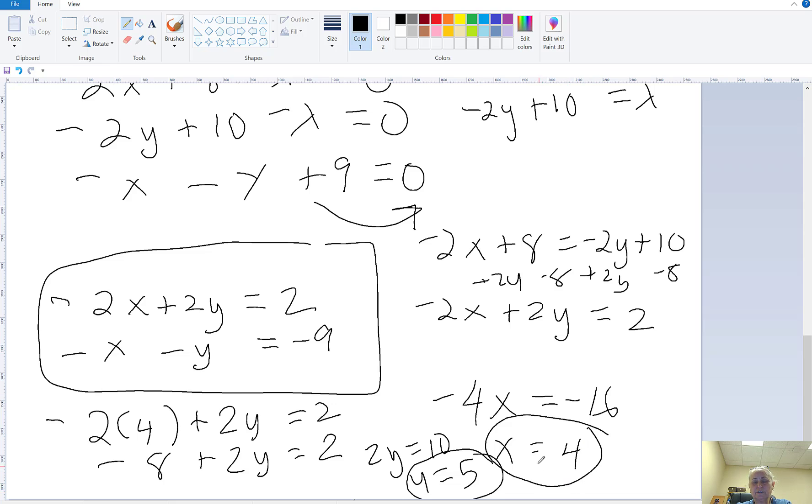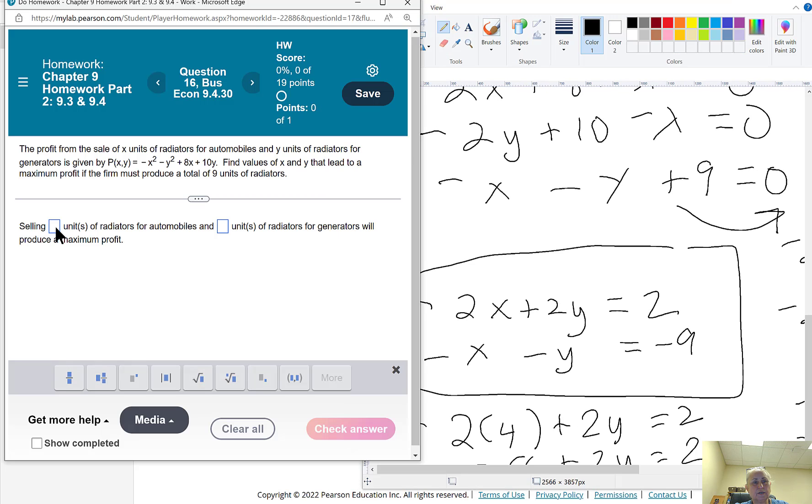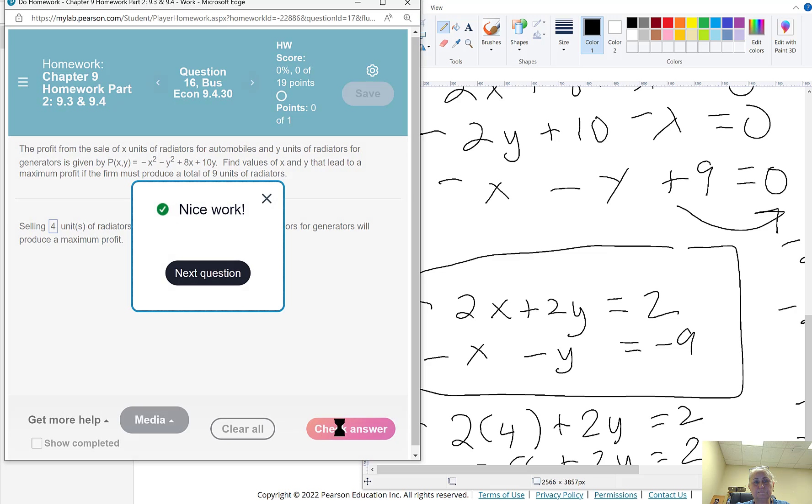So now I know x is 4 and y is 5. So x stood for the radiators for the automobiles, and y, which is 5, is the number of radiators for the generators. Now let's do this. Thank you so much.